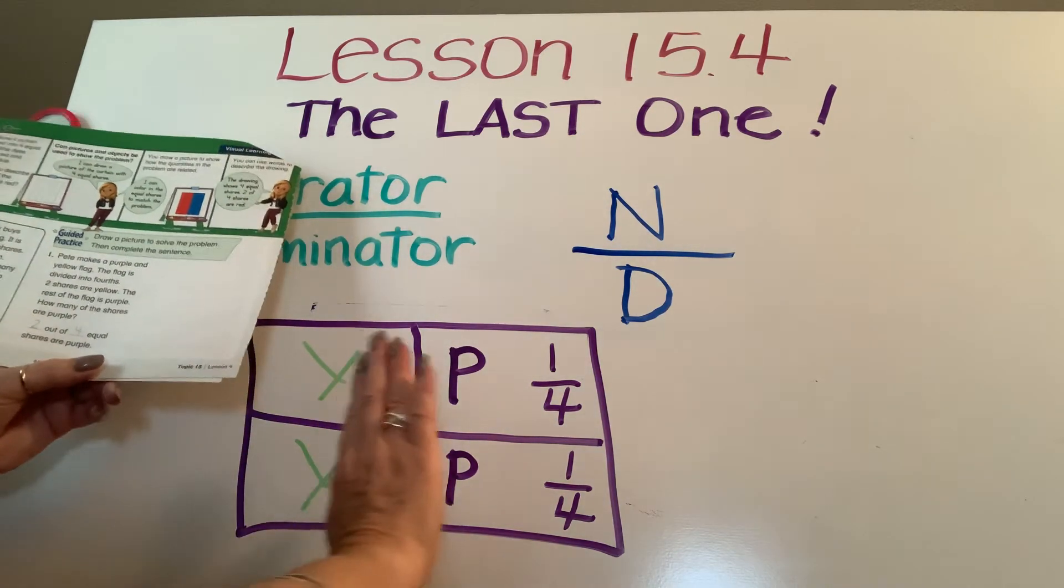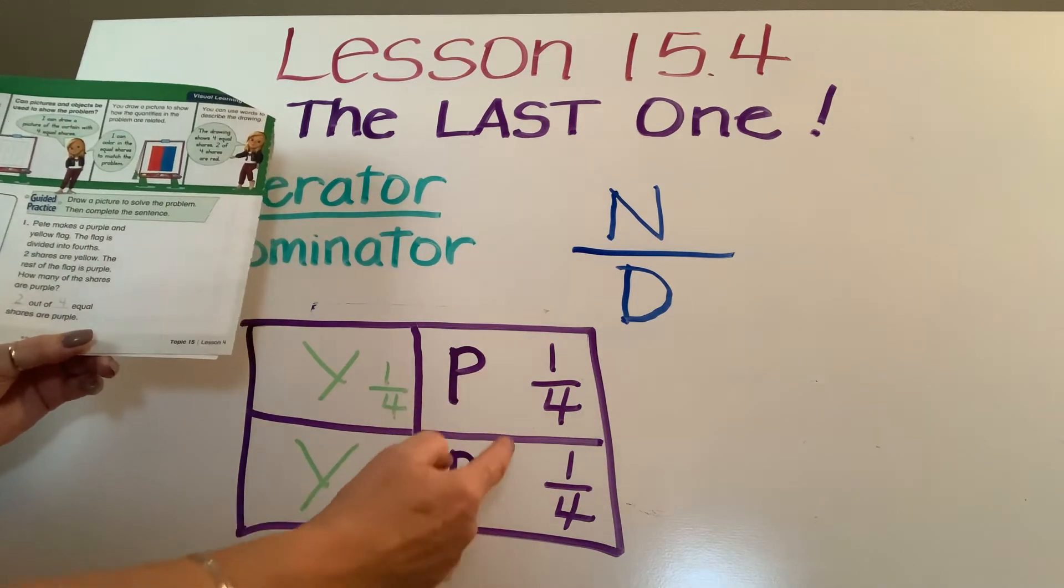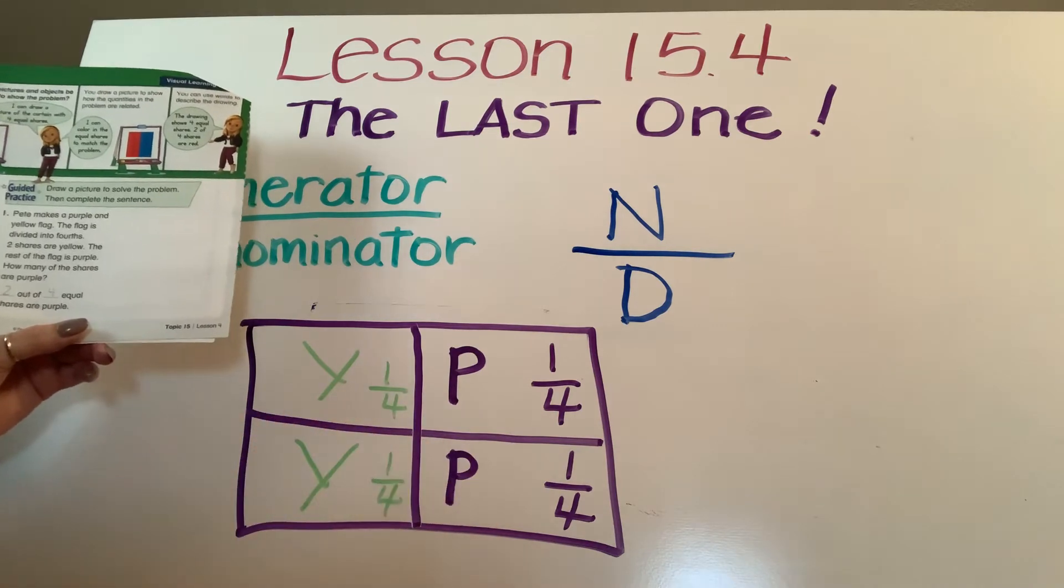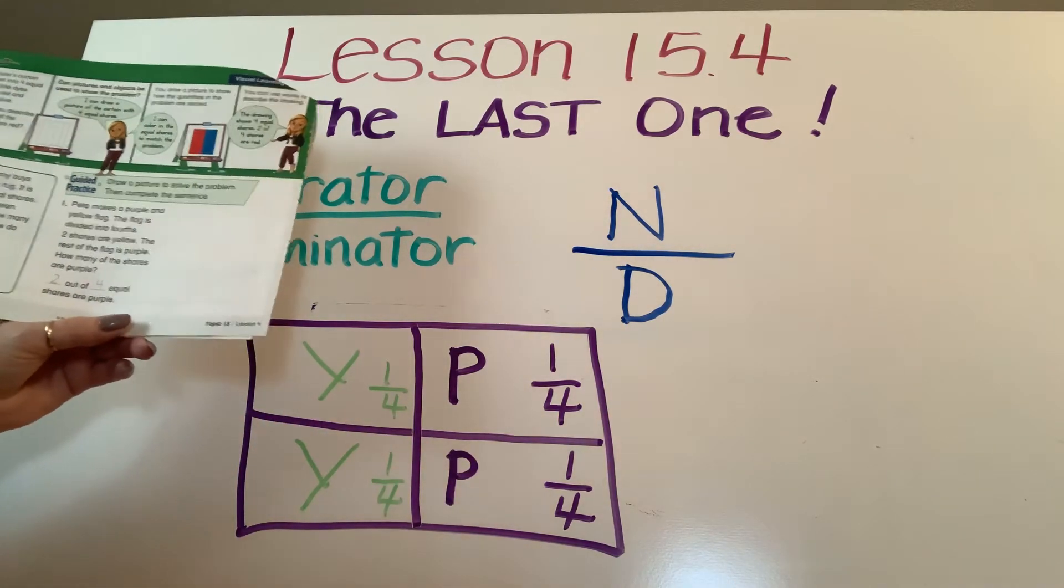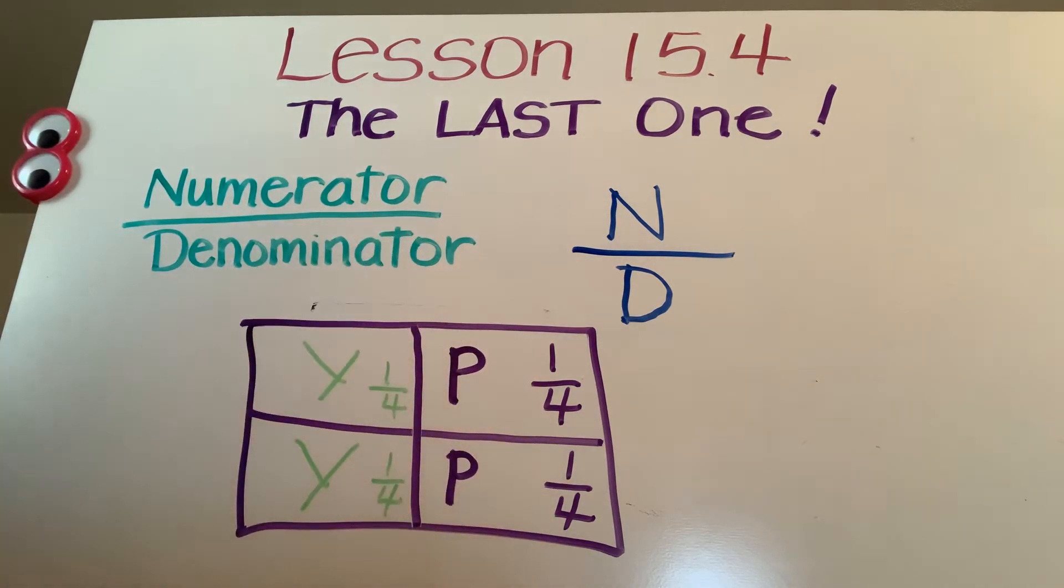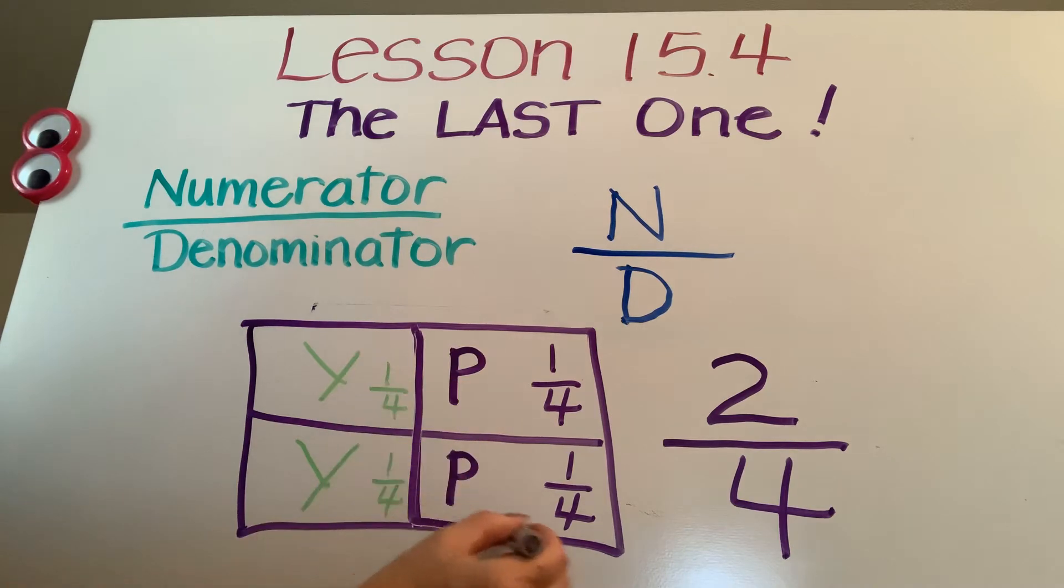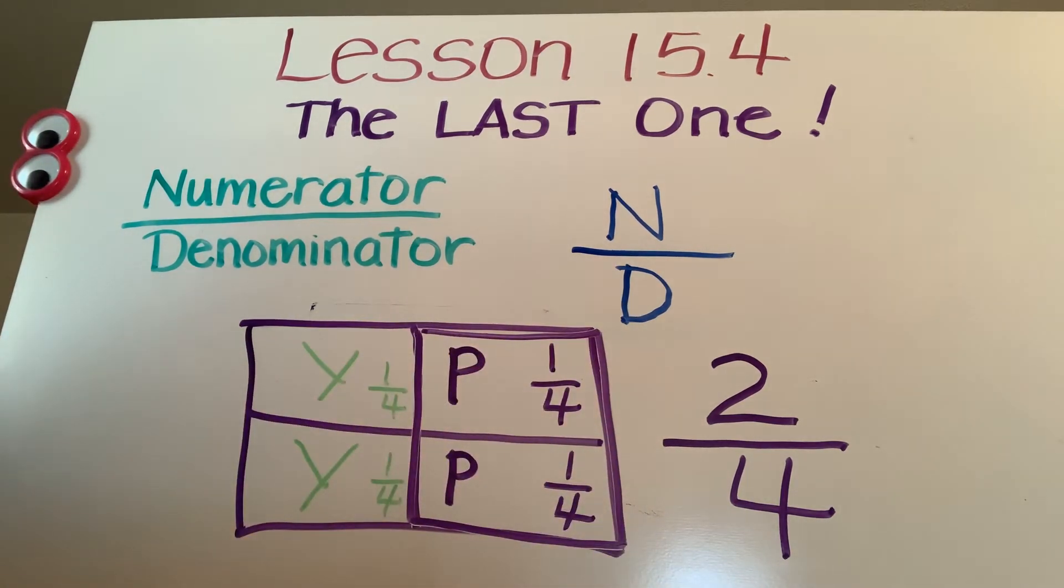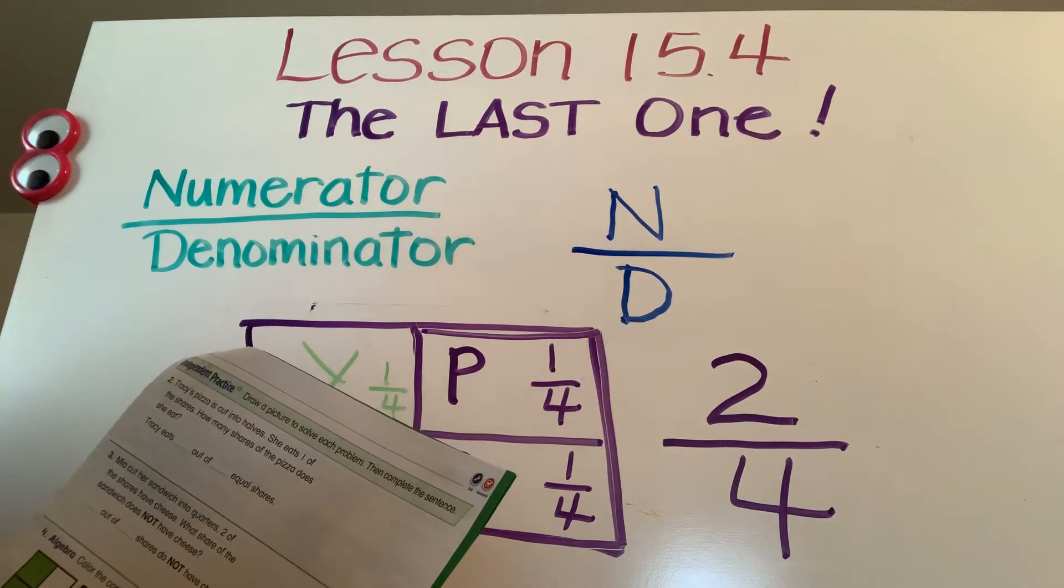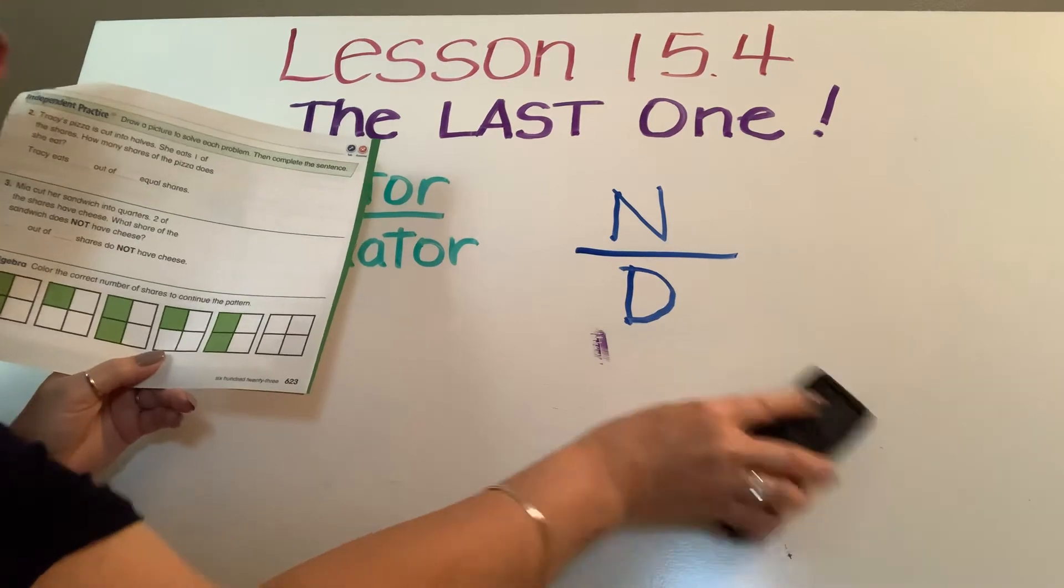Everybody with me so far. Now remember you can draw that over there while I'm waiting. Two shares are yellow, the rest of the flag is purple. How many shares are purple? Let's just count. One, two. Good job, Isaiah. Thank you for counting out loud. I love it when you guys do that. So two shares are purple. Two out of what? Two out of four. So what would we say the fraction is for purple? I have two of them are purple. Out of how many? Out of four. So do you see how that fraction is two over four?